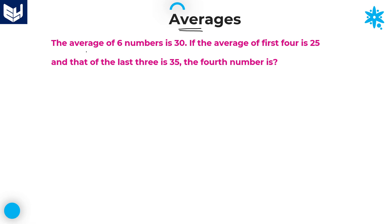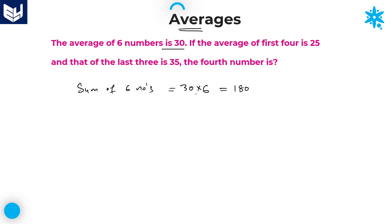See here, the average of 6 numbers is 30. Therefore, sum of 6 numbers is equal to average into number of values, that is 30 into 6, which equals 180. Sum of 6 numbers is equal to 180.